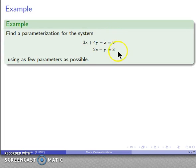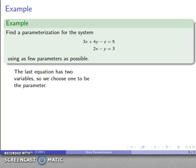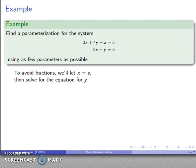For example, let's say I have this system of equations, and I want to use as few parameters as possible. The last equation has two variables. So I can start by parameterizing one of those variables. I'll let x equals s to avoid fractions, and I'll solve the equation for y. So 2s minus y equals 3, solve that for y, and I have my variable y now in terms of s. My variable x is also in terms of s.